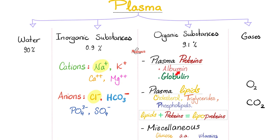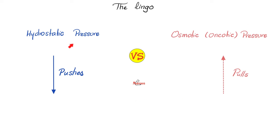Since albumin is the most abundant plasma protein, it is the most osmotically relevant. Remember, osmosis cares about the number of particles — not the weight, not the size, the number. However, there is hydrostatic pressure and there is osmotic pressure. Osmotic pressure is the same as oncotic pressure.